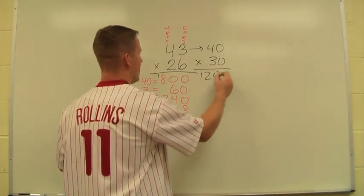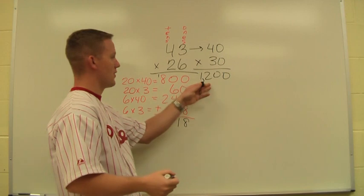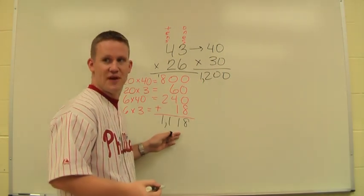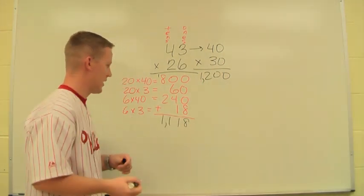So this way they can get an idea of where their answer should be, which in this case is around 1,200. Once they know their answer's in the thousands, if they get an answer in the thousands or close to that, they know they're correct on that problem.